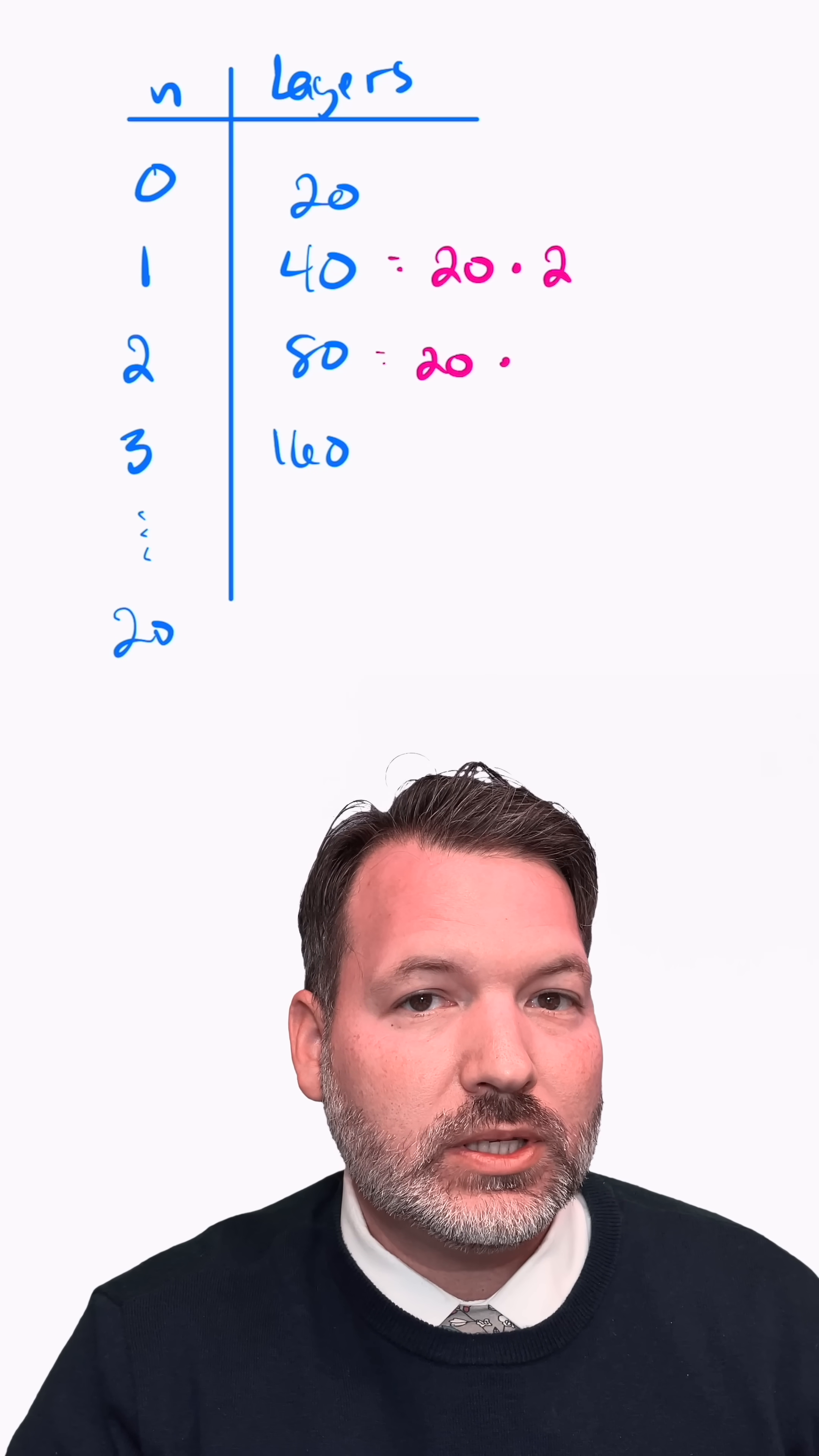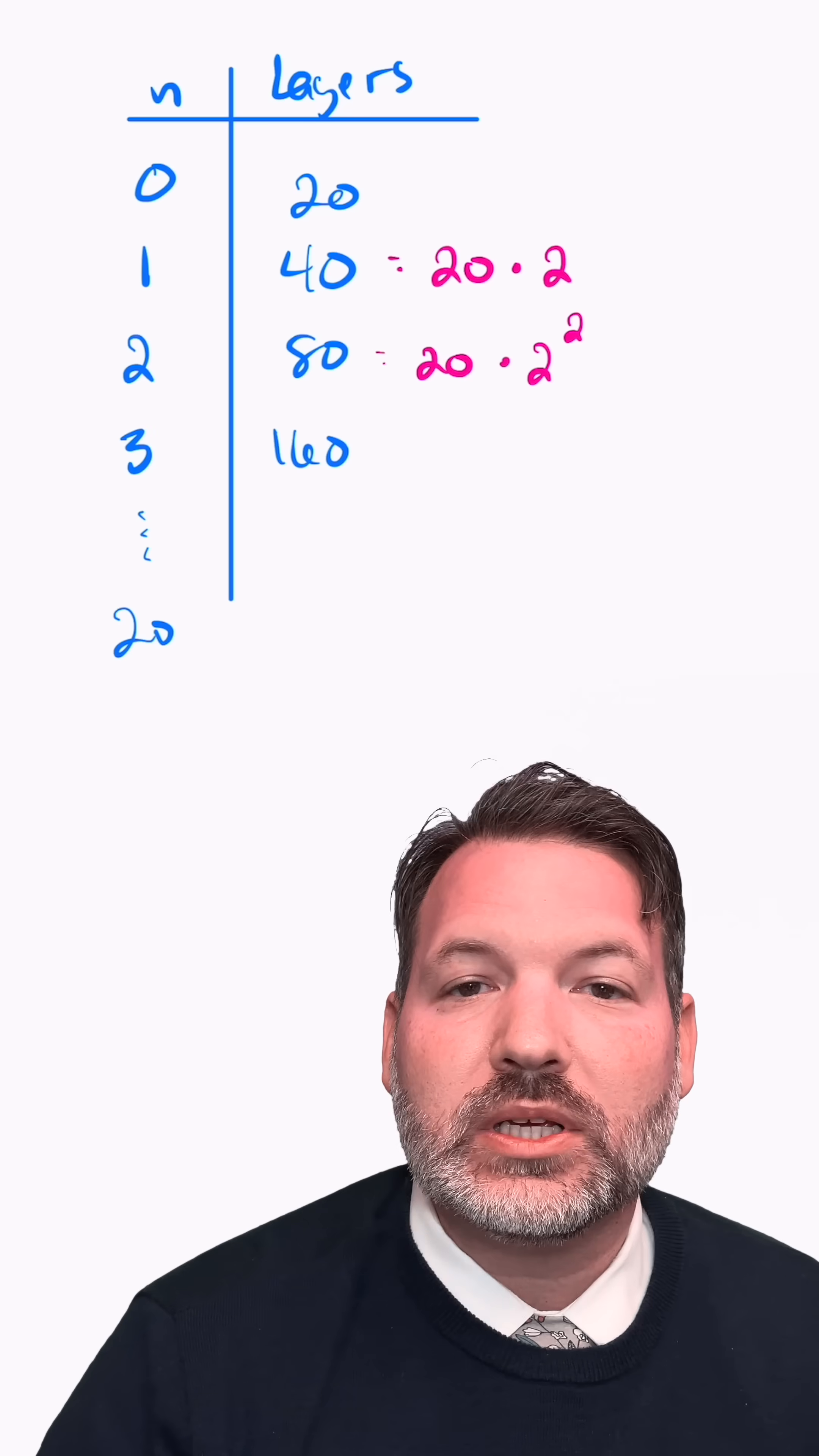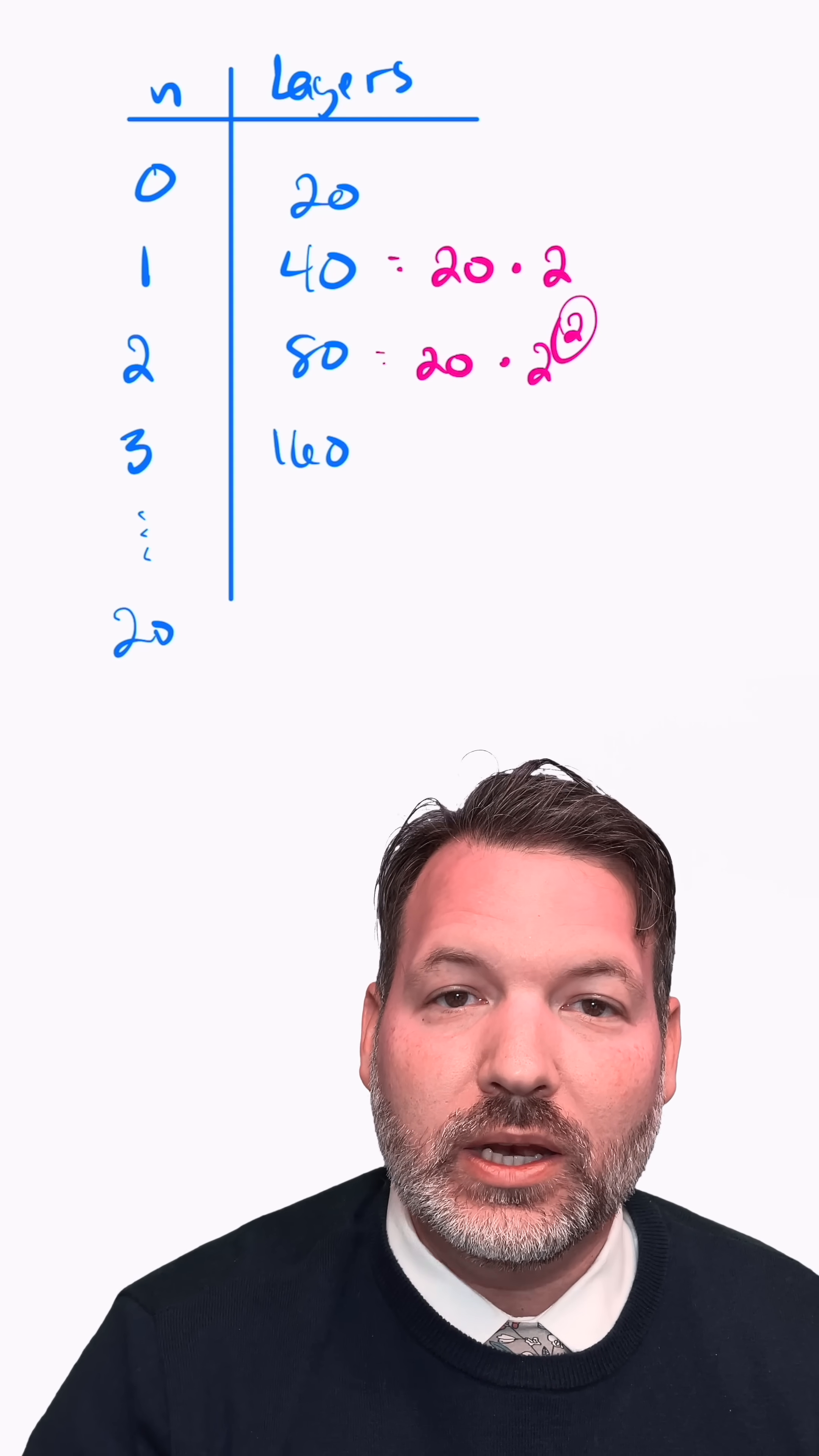If we try and set up the next cut after that in a similar way, we could say it's 40 times two, but that doesn't really help us write an equation in general. We want as little to change as possible. Instead, let's call it 20 times two squared or two to the second power because we've now made that cut twice. So we can tell our exponent is the number of cuts.